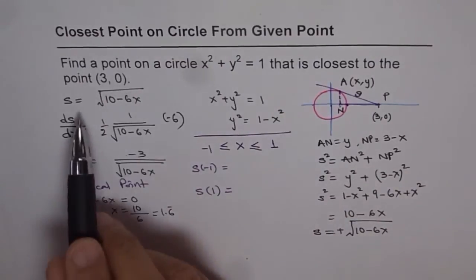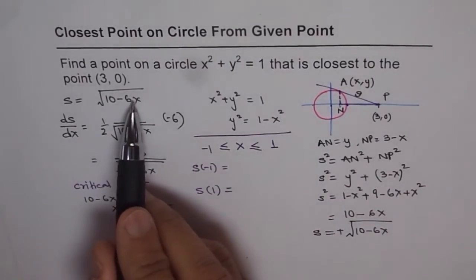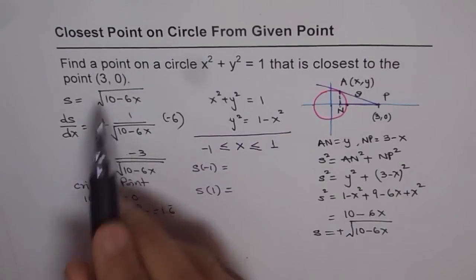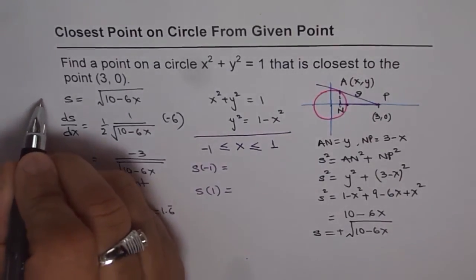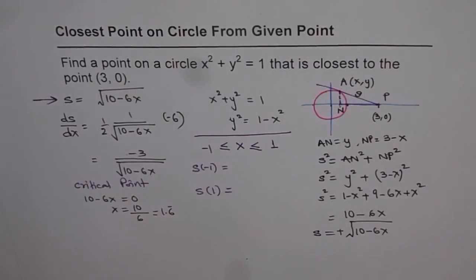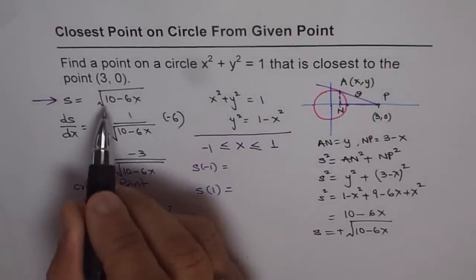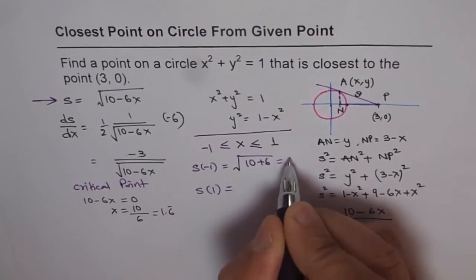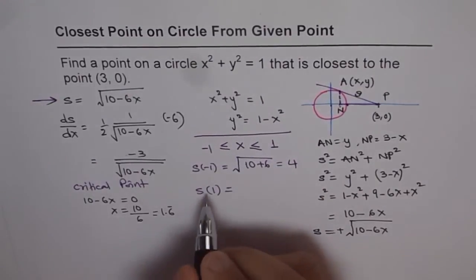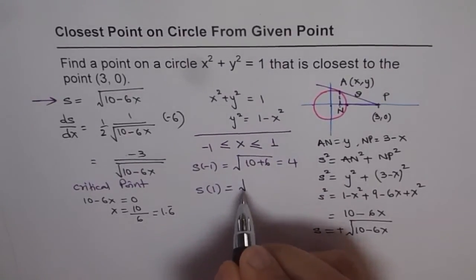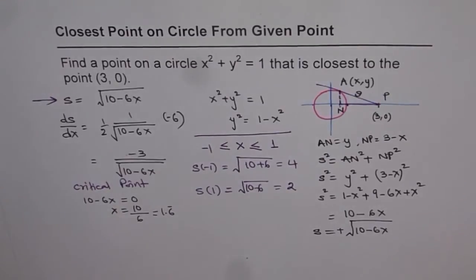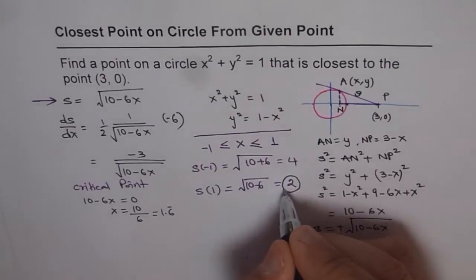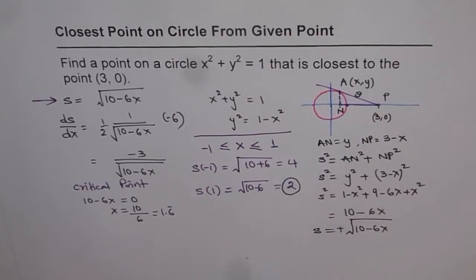Now if I put in this equation s as minus 1, then I get 16 square root. This is the equation which is going to give me the distance. If I put minus 1 here I get square root of 10 plus 6 which is square root of 16, gives me a distance of 4. And when I put 1 here, I get square root of 10 minus 6 which is square root of 4, gives me a distance of 2. So clearly I have my answer right there. This is closest. This is farthest, maximum distance.